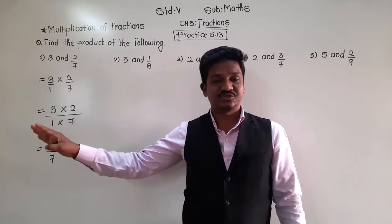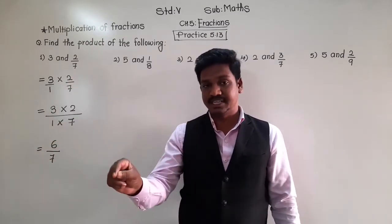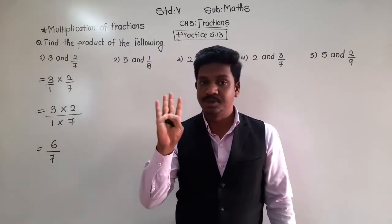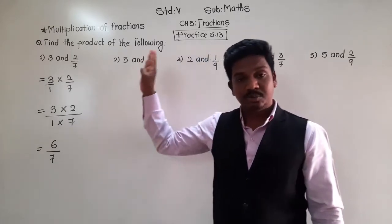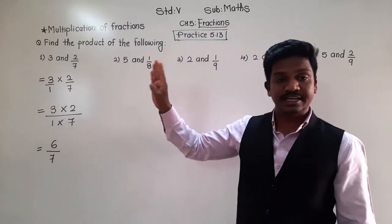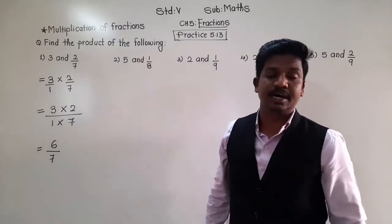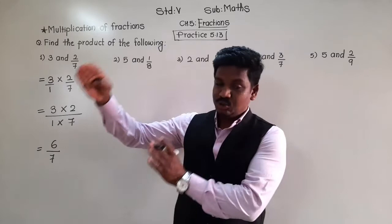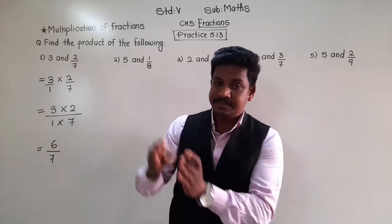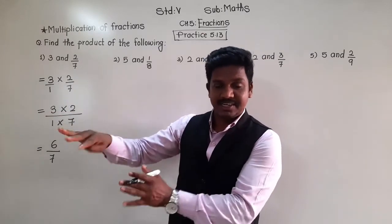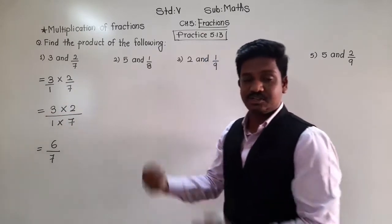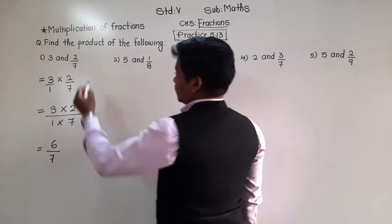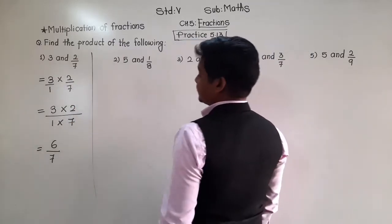Is this the same as addition and subtraction of fractions? No. In addition and subtraction, the denominators must be the same and we add or subtract only the numerators, not the denominators. So, multiplication and division are different from addition and subtraction. Keep the rules of addition and subtraction in mind separately, and multiplication rules separately. The answer is 6 upon 7.